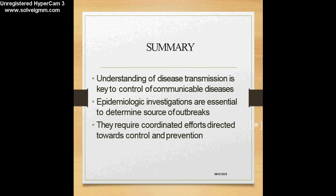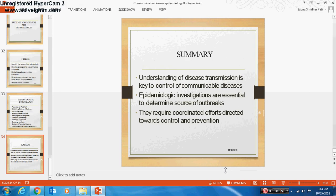To summarize: understanding of disease transmission is very much vital — it is the key to controlling communicable diseases. Epidemiological investigations are performed to determine the source of outbreaks, and to do these investigations we require coordinated efforts directed towards control and prevention. That's all about communicable disease epidemiology with reference to control and prevention. Thank you very much.